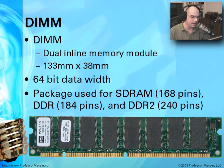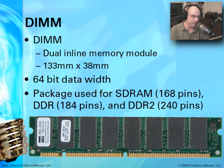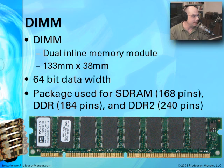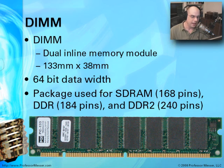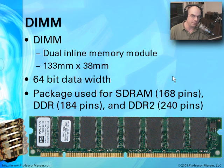This DIMM package is used for SDRAM, which has 168 pins; DDR memory, which has 184 pins; and DDR2, which has 240 pins. These form factors can be used for different memory types, so the same package appears with a different number of pins as you move between memory types. Those pin counts are things you're going to have to know for the A-plus exam, so just keep that in mind.